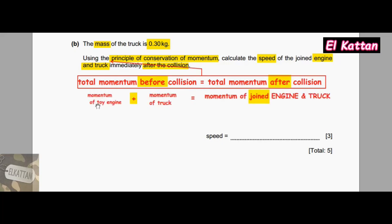Momentum of toy engine plus momentum of truck equals momentum of joined engine and truck after collision. Momentum of toy engine is 0.16, plus the momentum of truck, which was stationary before collision, so its momentum is 0.